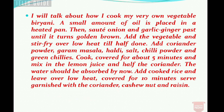Now I am going to focus on the second question — what it is made of. I will give the full recipe because I know it well and I can speak it fast. I will talk about how I cook my very own vegetable biryani: a small amount of oil is placed in a heated pan, then sauté onion and garlic-ginger paste until golden brown. Add the vegetables and stir-fry over low heat till half done. Add coriander powder, masala, haldi, salt, chili powder, and green chilies. Cook covered for about five minutes, then mix in lemon juice and half the coriander. Once the water is absorbed, add cooked rice and leave over low heat covered for 10 minutes. Garnish with coriander, cashew nuts, and raisins.